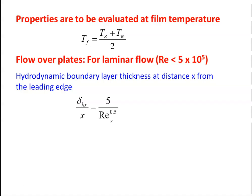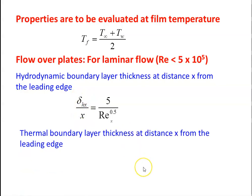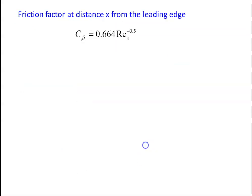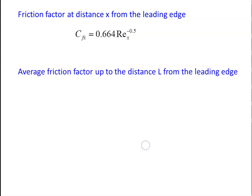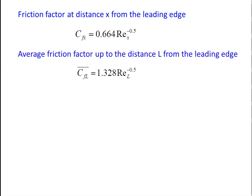All equations presented here are available in the heat and mass transfer data book. The thermal boundary layer thickness at distance x: δ_Tx / x = 5 / Re^0.5 × Pr^0.333. The local friction factor at distance x: C_fx = 0.664 × Re^(−0.5). The average friction factor over the entire plate length: C_fL = 1.328 × Re^(−0.5).